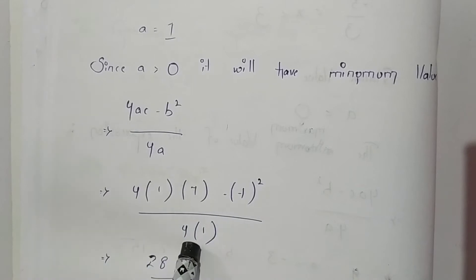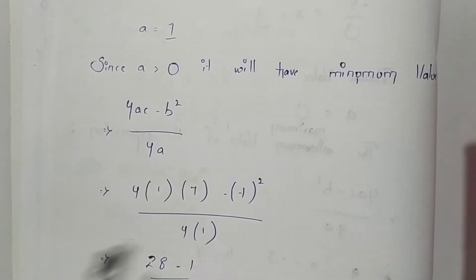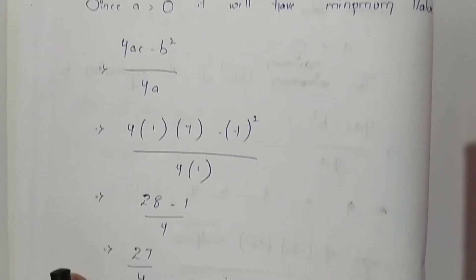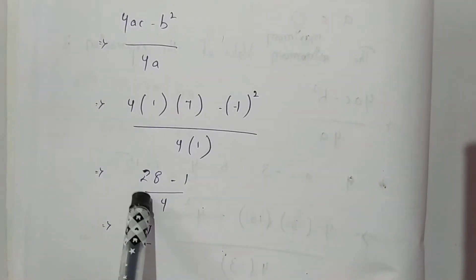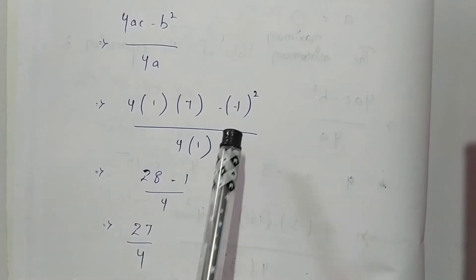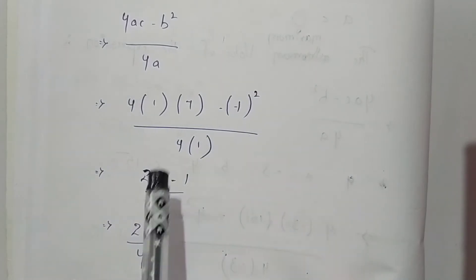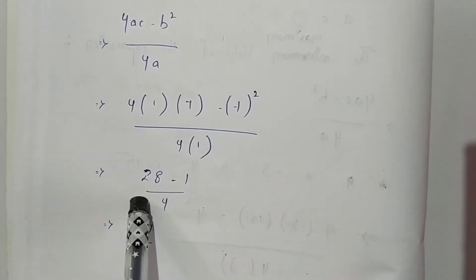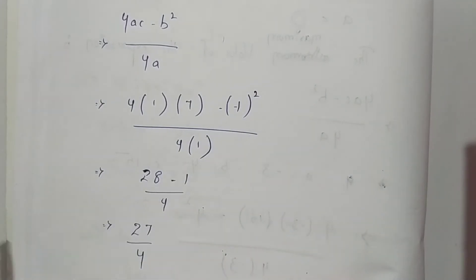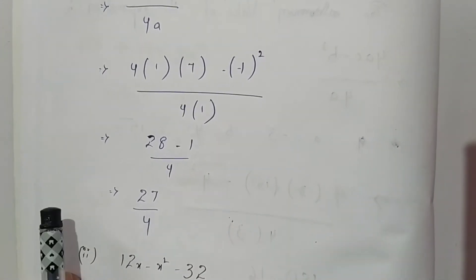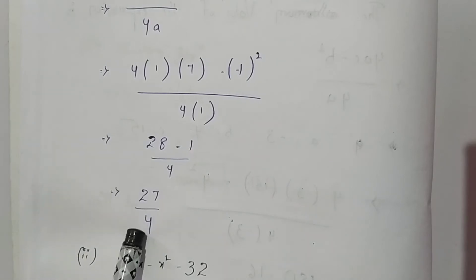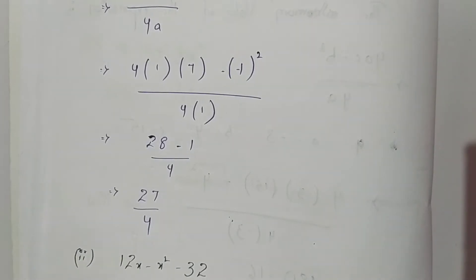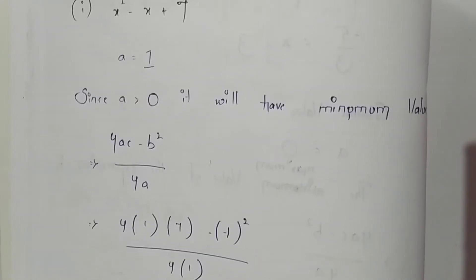4 × 7 gives 28, and (-1)² equals 1, so we get (28 - 1) / 4, which is 27/4. So 27/4 is the minimum value of this expression.